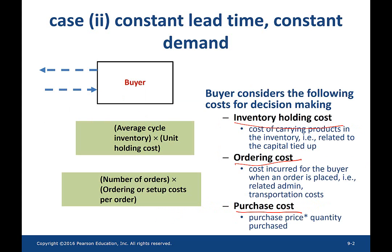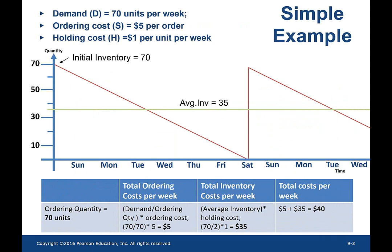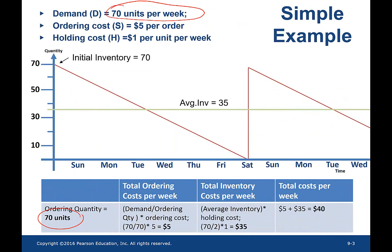Let us revisit the example we saw in case 1, where the demand is 70 units per week. The buyer has an ordering quantity of 70 units, and the supplier has a lead time of 0. Since the lead time is 0, the buyer places an order of 70 at the end of Saturday and receives it instantaneously.